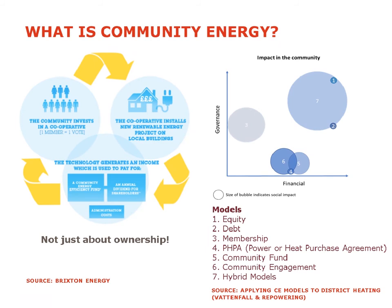The diagram on your left represents the model that most community energy organizations use today. This is a model where people invest and buy shares in these organizations, and the money raised is used to buy equipment — so it could be solar panels or a wind turbine. The shareholders, or members as they're known, get an interest from the money made every year. This particular diagram is from Brixton Energy, a group of cooperatives that I co-founded in London. This is known as an equity model.